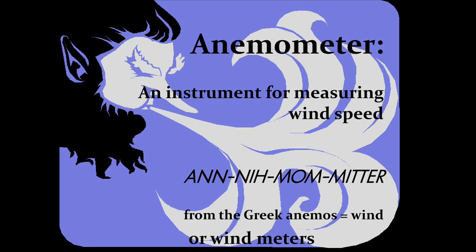I want to cover what an anemometer is and even the correct pronunciation. The word comes from the Greek 'animos,' meaning wind — so these are basically wind meters. The correct pronunciation is 'anemometer.'